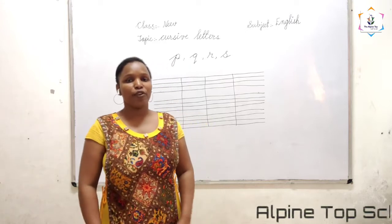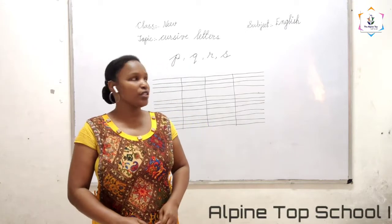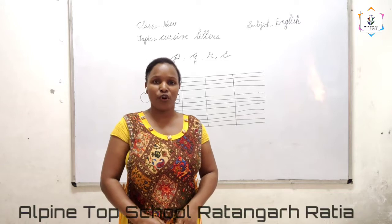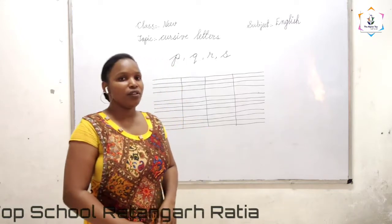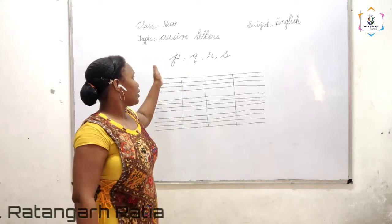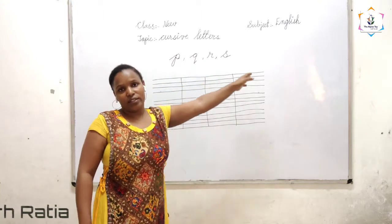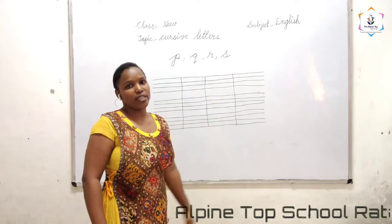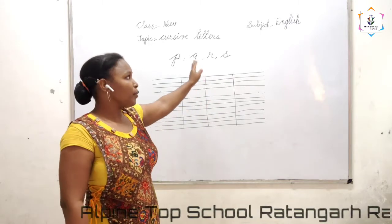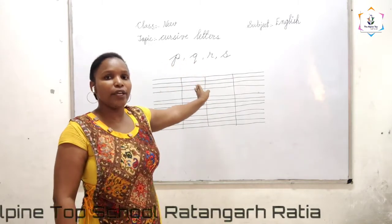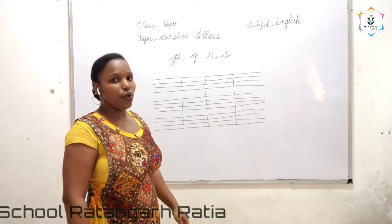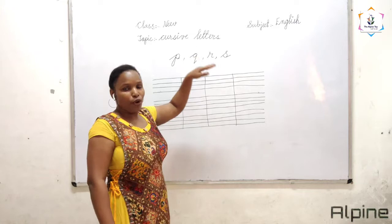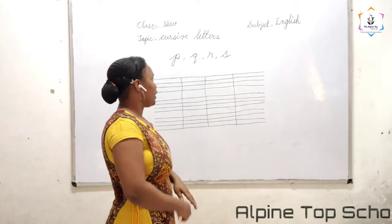Hello students, and from today onwards we are starting our second term syllables. I hope you all are doing well. Today we are doing P, Q, R and S letters — P, Q, R and S. These are the new letters. In the first term we have learnt A to O. After O, P will come. After P, Q. Like this we are going to learn one by one. Let's start.